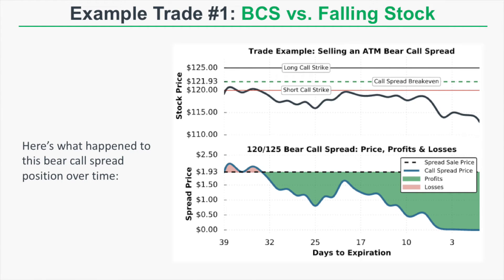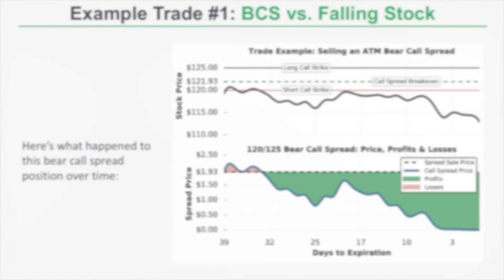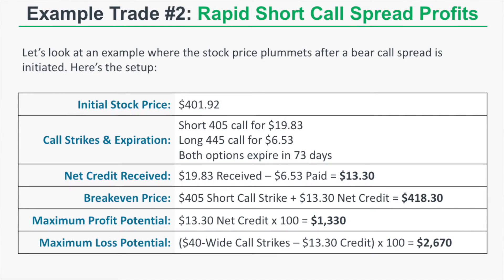At expiration, the short 120 call and long 125 call expire completely worthless because they are out of the money. We keep the entire credit of $1.93, which comes out to a profit of $193 per spread. This shows that if you sell a call spread and the stock price remains below your short call strike through expiration, you'll experience steady profits and the maximum profit potential at expiration.